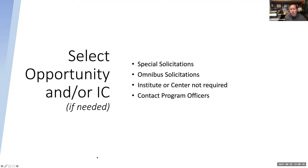The first thing you need to do if you haven't already done so is select an opportunity to apply to. For NIH, you typically have two general opportunities. The first is the omnibus, which is a really large opportunity that covers 24 institutes and centers. You do not have to select a particular institute or center if you're going in under the omnibus — it's sort of the catch-all. The other opportunity may be a special solicitation.